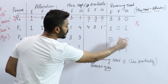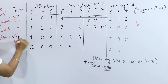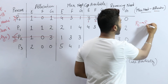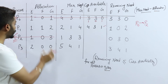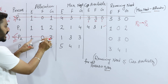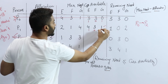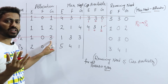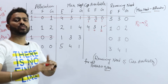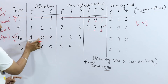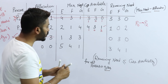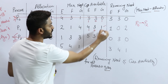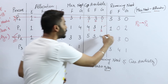P2 is added to the safe sequence next and gets executed and terminated. When P2 terminates, we take back its already-allocated resources (1, 0, 3) and add to availability: 4+1=5, 3+0=3, 1+3=4. New current availability is (5, 3, 4). P2 is removed from the system.